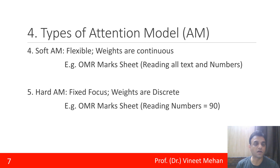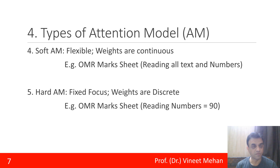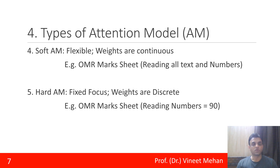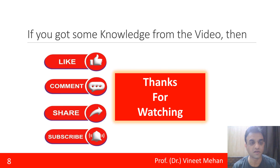The fourth type is the soft attention model, which is flexible — weights are continuous in nature. For example, in an OMR marks sheet, a soft attention model reads all the text and numbers present in the image. The fifth type is the hard attention model, which has fixed focus — weights are discrete. For example, reading a particular number like 90 from an OMR sheet represents a fixed focus, making it a hard attention model.